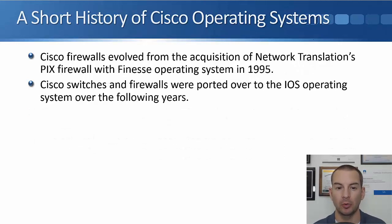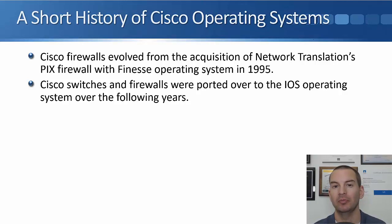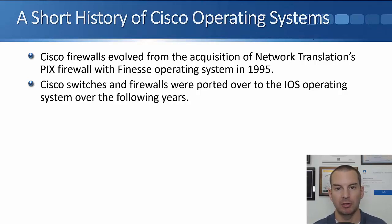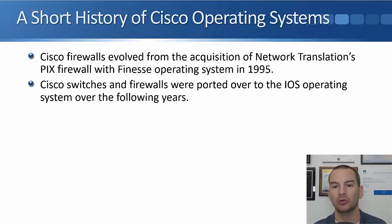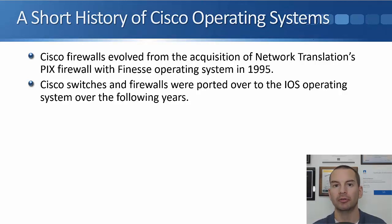Cisco firewalls evolved from another acquisition — the acquisition of Network Translation back in 1995. Cisco got their PIX firewall from that, which uses the FINESSE operating system. Both the Catalyst switches and originally the PIX firewalls — now the ASA firewall — were ported over to the IOS operating system over the following years.